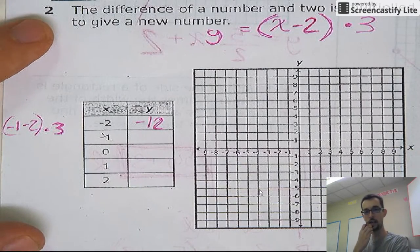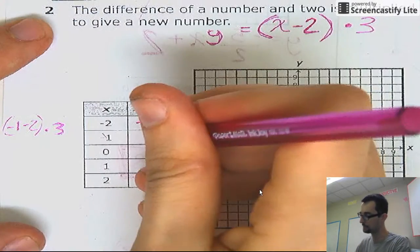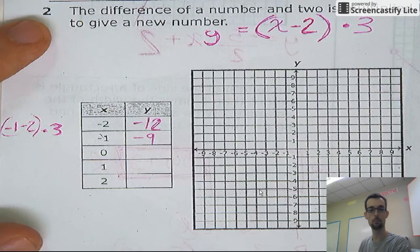Negative three times three is, let's see, three times three is nine, but it'd be negative, right? Okay, cool.